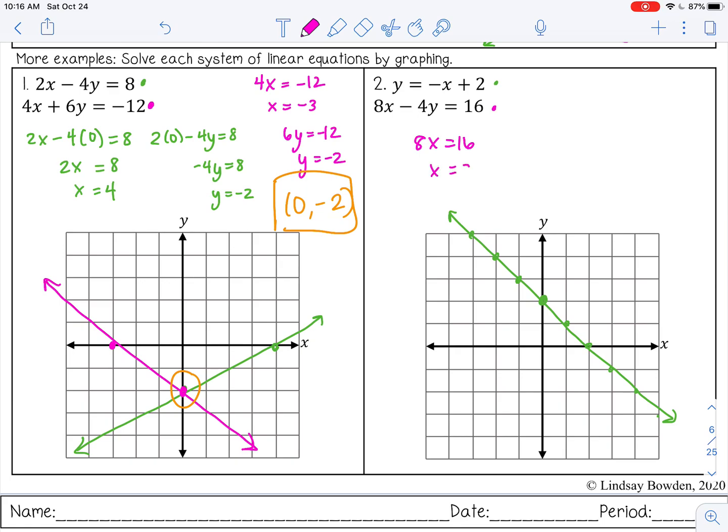The second one is in standard form, so I'm going to find my intercepts. x is two. When I'm doing this, all I'm doing is substituting in zero for x and for y to find the opposite intercept. When you substitute in zero, it just makes that term go to zero, so you don't have to write the term; it's just kind of a shortcut.